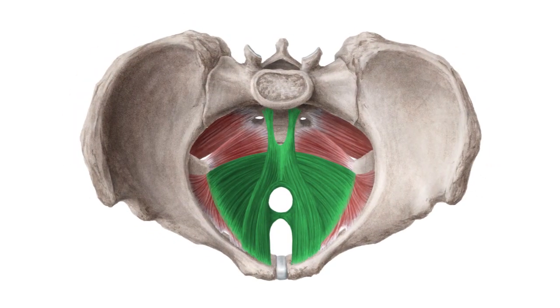The levator ani forms the main part of the pelvic diaphragm, a layer of the pelvic floor known as the cranial layer. The levator ani is made up of three muscles.